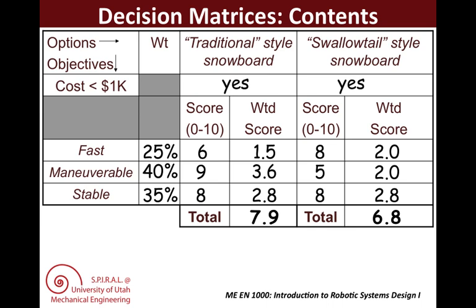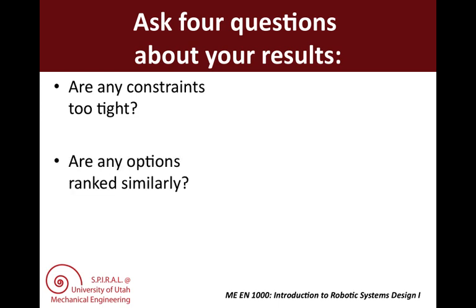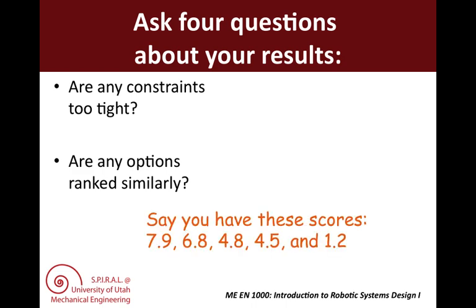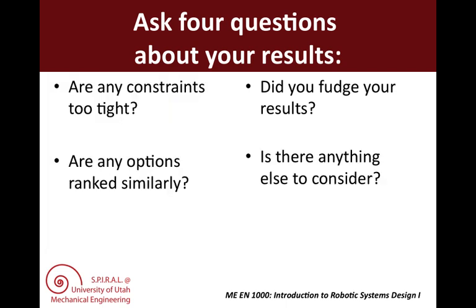Although this ostensibly means the traditional style won, we must remember that these are subjective rankings and we must ask ourselves the following four questions. We already discussed the importance of making sure you have not eliminated any good options by having too tight a constraint. Next, any options that are ranked about the same should be considered equal since these are subjective rankings. For instance, if you have five designs with scores of 7.9, 6.8, 4.8, 4.5, and 1.2, you can probably eliminate the 1.2, and you can consider the 4.8 and 4.5 as runners-up. The 7.9 and 6.8 are close enough that you should do some further evaluation, perhaps with other portions of your objective history or by constructing CFPs. Next, make sure that you have not fudged the importance and or the scores to get a desired result. As a team, you need to be very careful that no one has strong-armed the group into giving a favored design higher rankings. Lastly, think about what else you may need to consider, such as modeling, CFPs, evaluation of other objectives, etc.